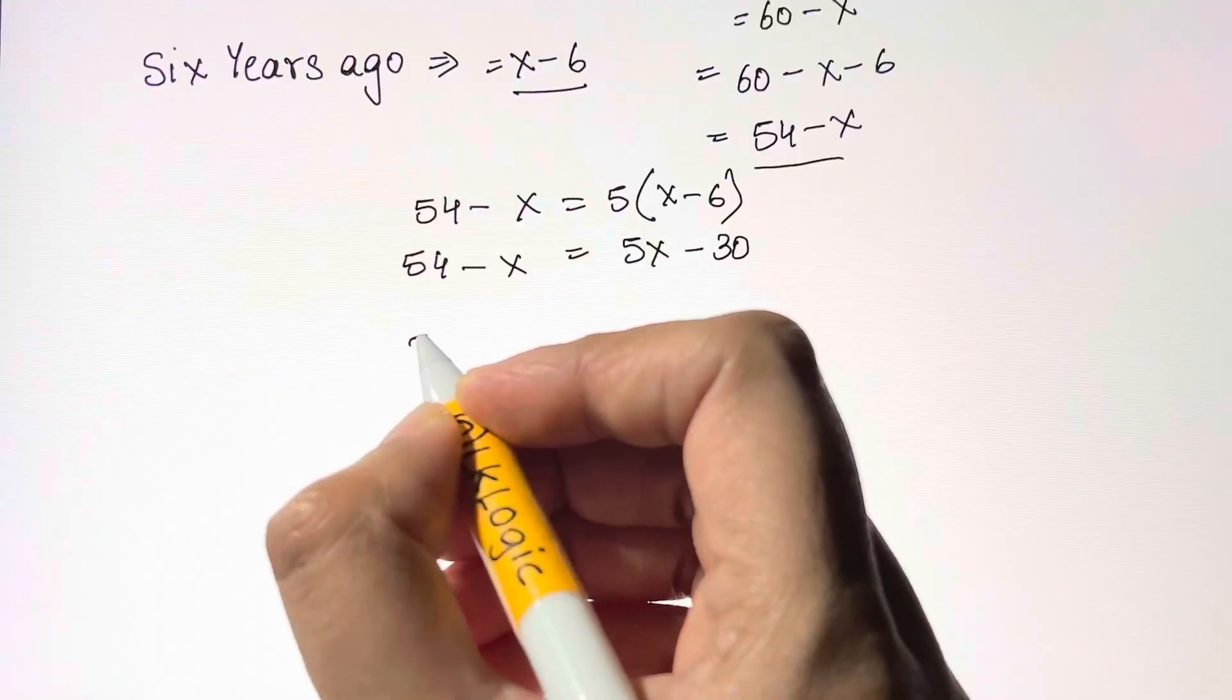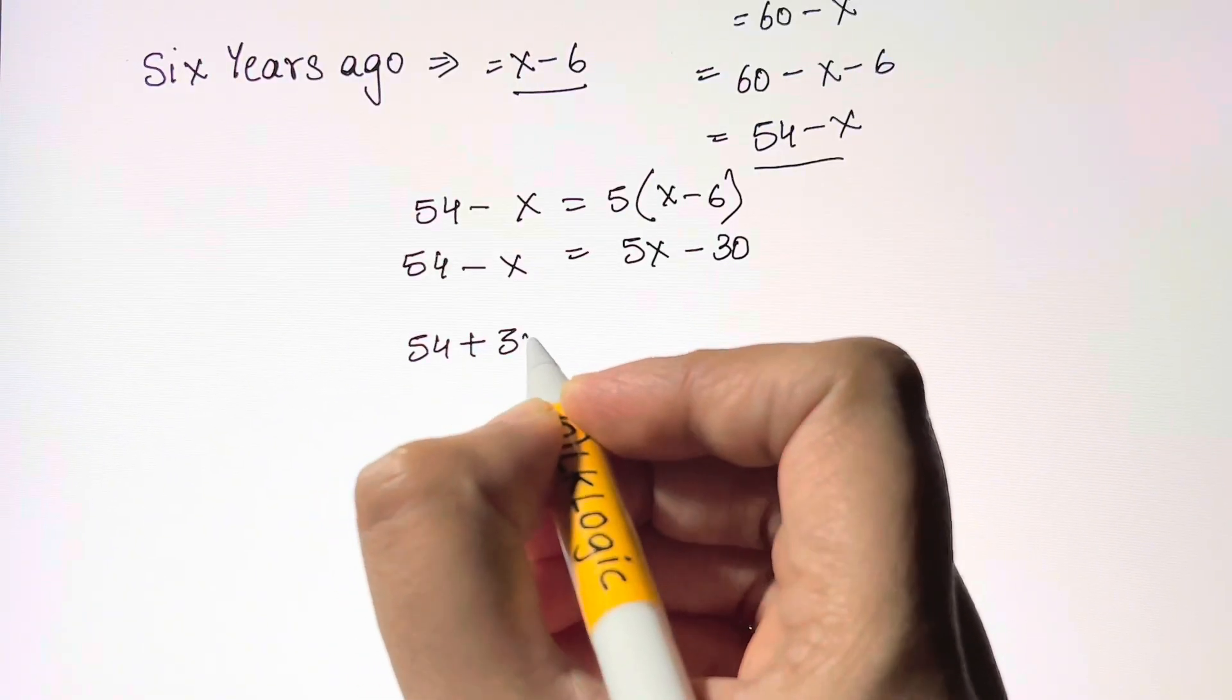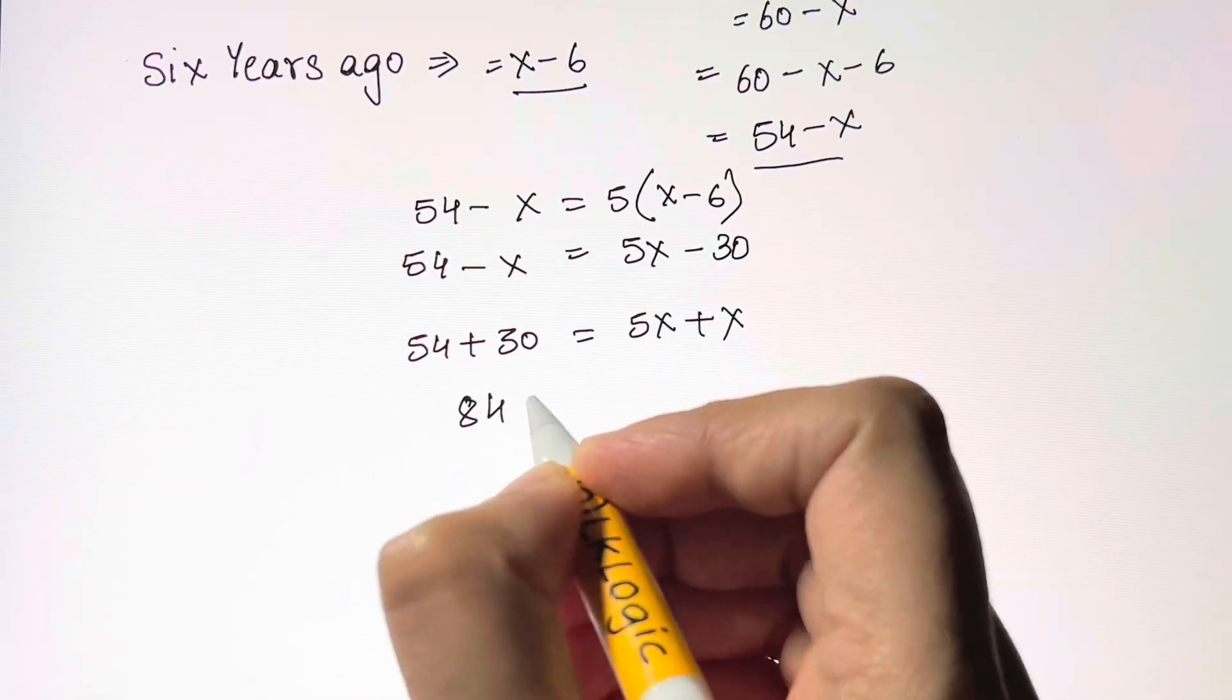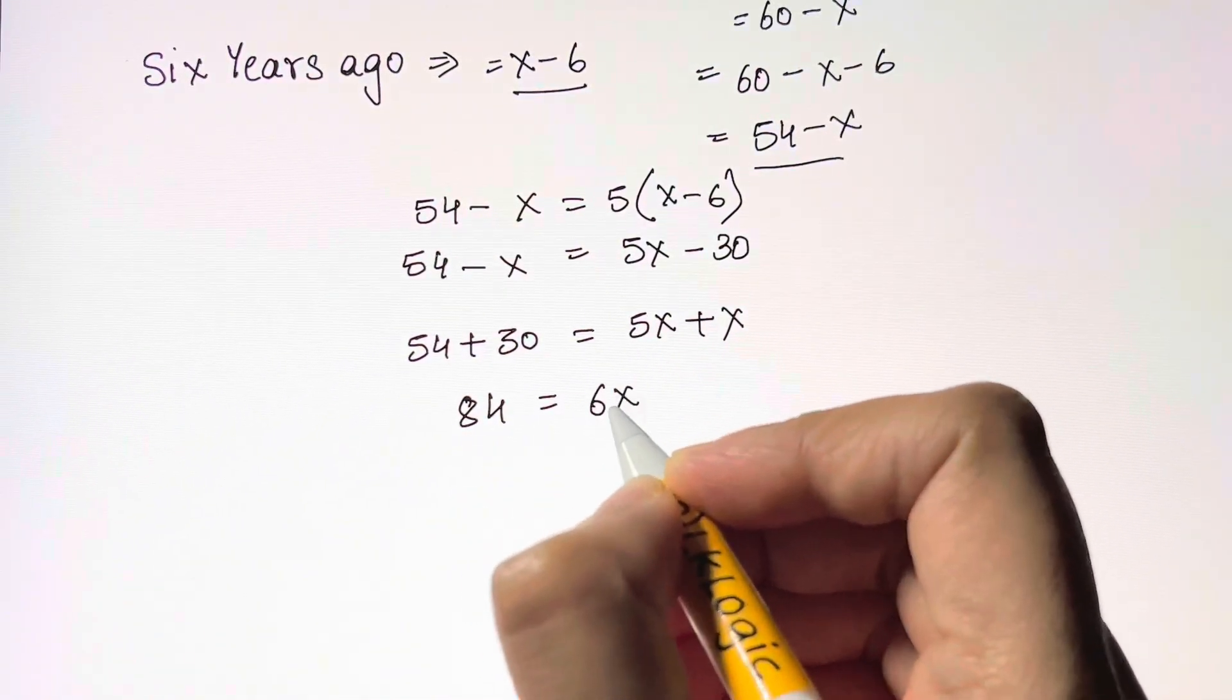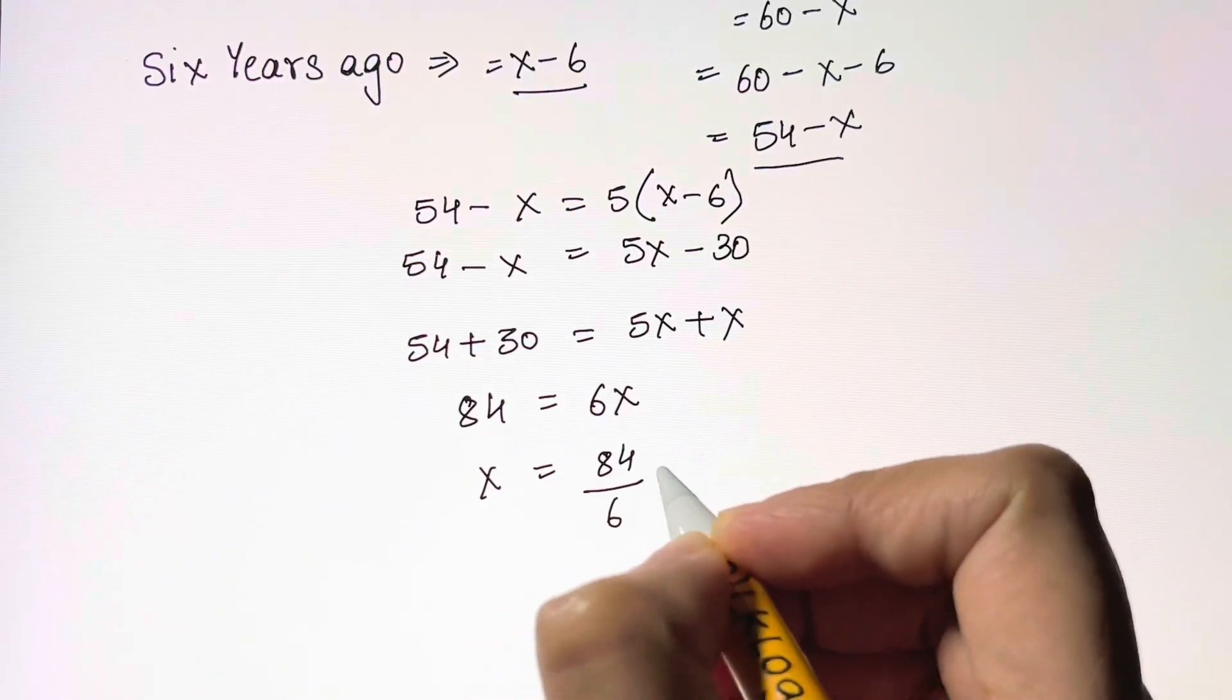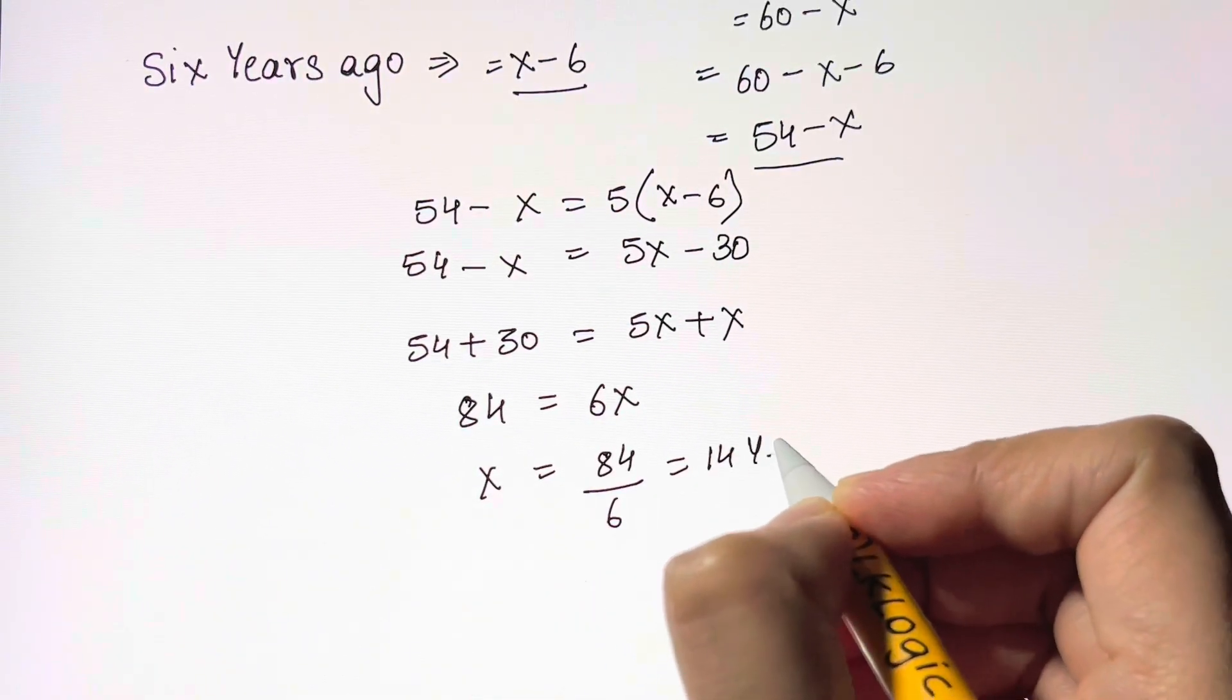Bringing all constants to one side and x terms to the other side: 54 + 30 = 5x + x. We get 84 = 6x, so x = 84 ÷ 6 = 14. Therefore, x is the son's present age, which is 14 years.